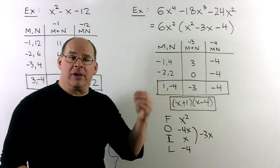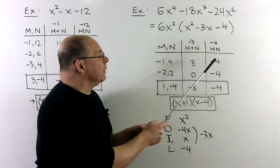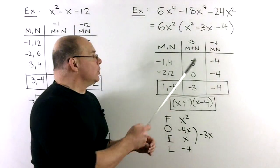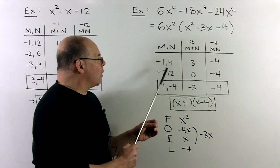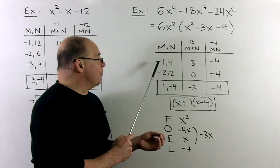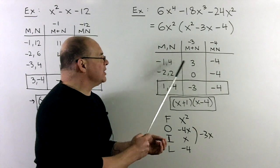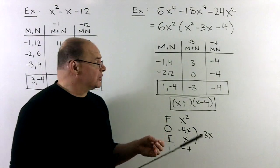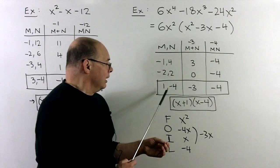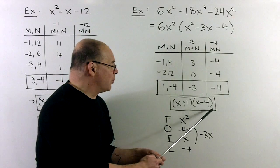Now we can try to factor x squared minus 3x minus 4. We have b equal to minus 3 and c equal to minus 4. Setting up the table, we try to factor minus 4 into factors that add to minus 3. Factors of 4 are 1 and 4, and 2 and 2. To get a minus 4, one factor needs to be negative, so we use minus 1 and 4, and minus 2 and 2, which sum to 3 and 0. We're almost there with the first. Changing signs to 1 and minus 4 gives a sum of minus 3 and product of minus 4 — that's what we want. So we get x plus 1 times x minus 4.